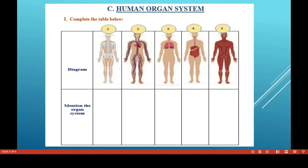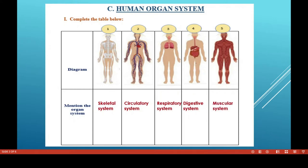Can you guess the first one? Skeletal system. The second system is the circulatory system. The third one is the respiratory system. The fourth is the digestive system. And the fifth is the muscular system. So here we have 5 organ systems, and we are going to learn what is the function and what organs are involved in each system.